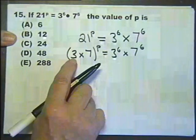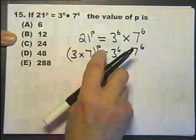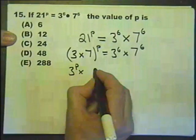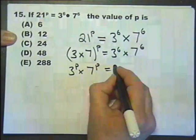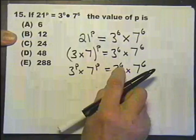Now I know that you can split this. Instead of doing 3 times 7 all raised to the power of p, you can split it into 3 raised to the power of p, multiplied by 7 raised to the power of p, which is exactly the same as the right side.